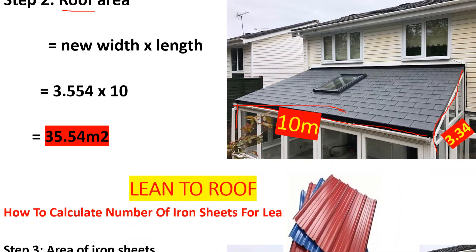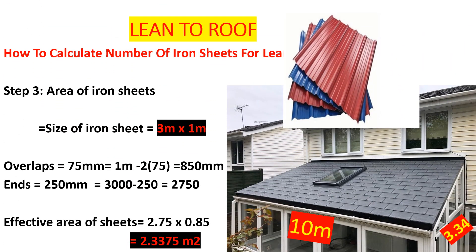Now for the iron sheets — we've calculated the area of the iron sheets separately. The size of the iron sheet is 1 meter by 1 meter. Remember we have the overlaps and the ends. If we subtract the overlaps, the width remains at 0.95 meters, and if we subtract the ends, the length remains to be 2750 mm, that is 2.75 meters. So the effective area of the sheets is 2.75 times 0.95, giving us 2.3375 square meters.